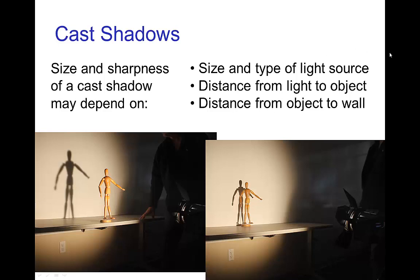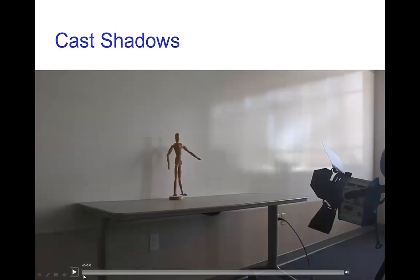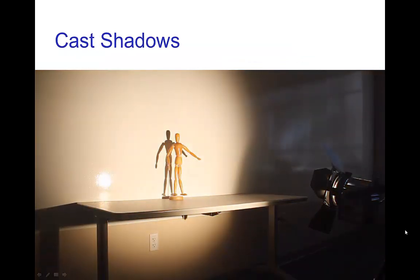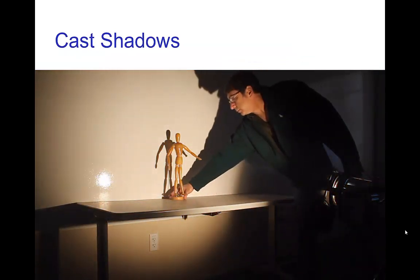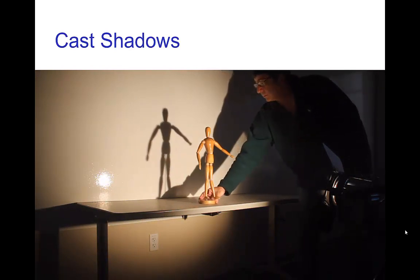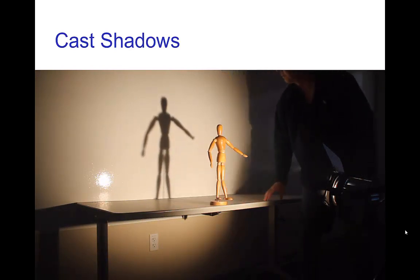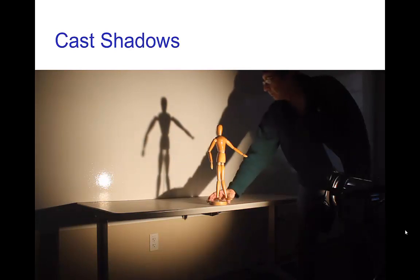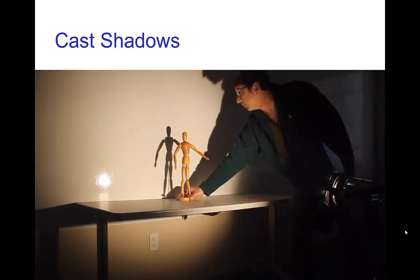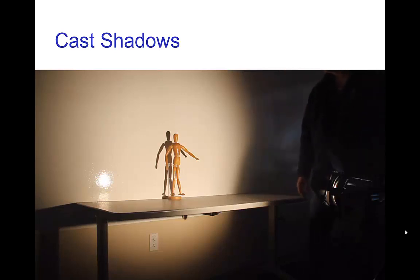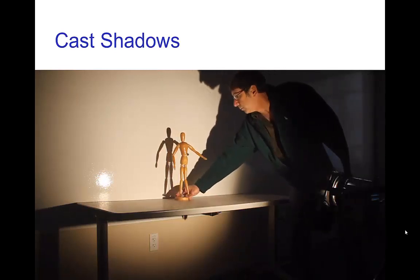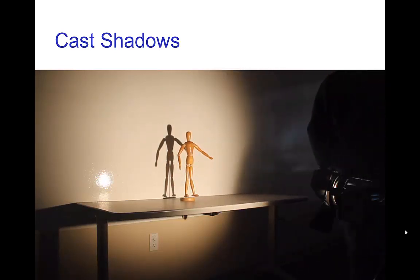and the distance from that object to the wall or whatever surface the shadow is being cast upon. So let's look at a little clip here where we have a light, we have an object and a wall that the shadow is being cast upon. Just focusing on the shadow, you see how it changes in size and sharpness as we position the object at different distances from the wall.